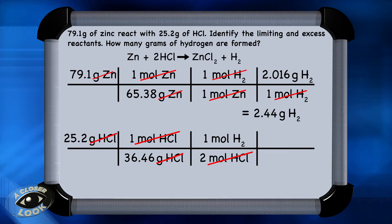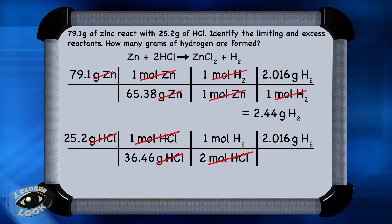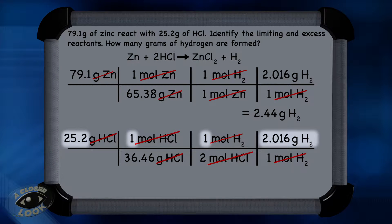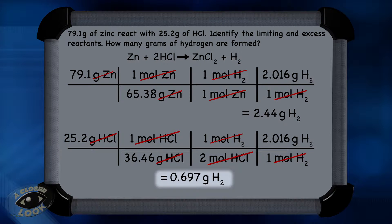We need to make one more column on the conversion chart to convert from moles of hydrogen to grams of hydrogen, as we did with zinc. So 2.016 grams of hydrogen goes in the numerator — that's one mole of hydrogen gas in the denominator. We can cancel out units for moles of hydrogen, and again, all we need to do is multiply across all the numerators and divide by the product of the denominators. We find that we can make 0.697 grams of hydrogen with 25.2 grams of HCl.